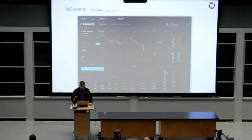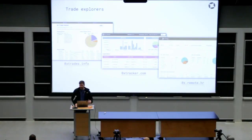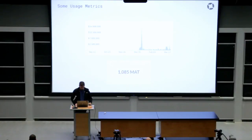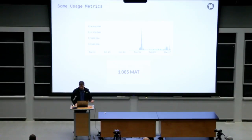There are a variety of different trade explorers that have been independently developed where you can see all the trading activity going through 0x protocol. Just some quick usage metrics: we launched in August and we're slowly seeing volume start to go through the system. Right now, the relayers and the 0x core team are focusing on building tools for market makers, which will significantly increase the volume going through 0x protocol. By checking the smart contracts, there are approximately a thousand people transacting using 0x protocol over the last month.